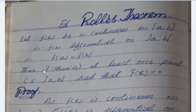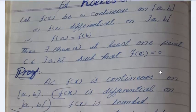If f(a) = f(b), then there exists at least one point c belonging to open interval (a,b) such that f'(c) = 0. This is the statement.